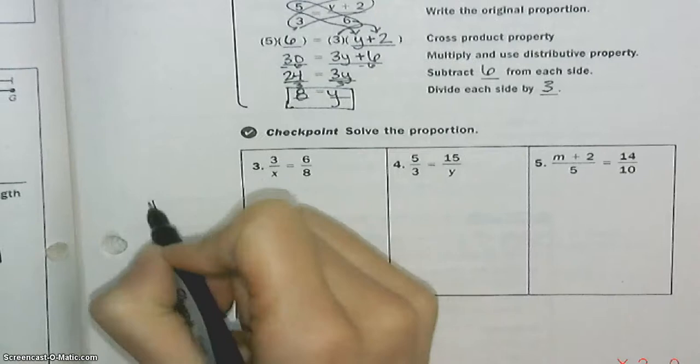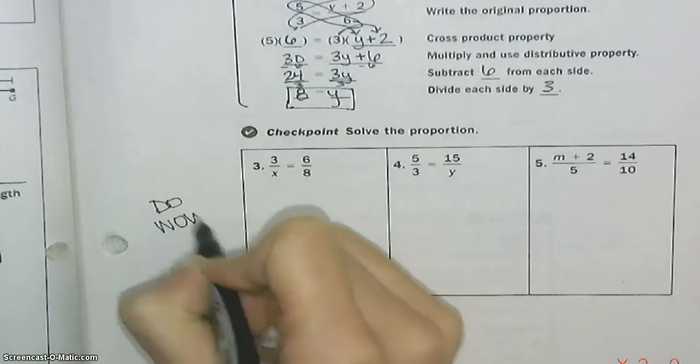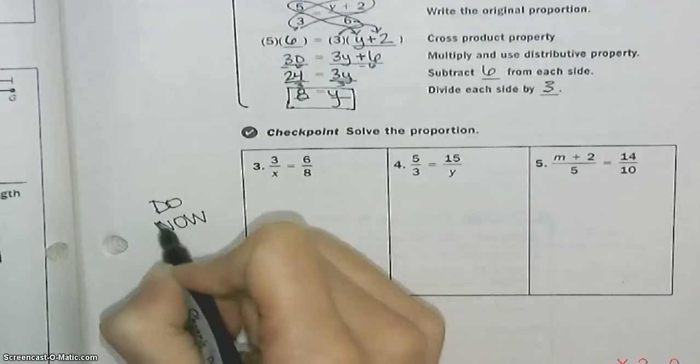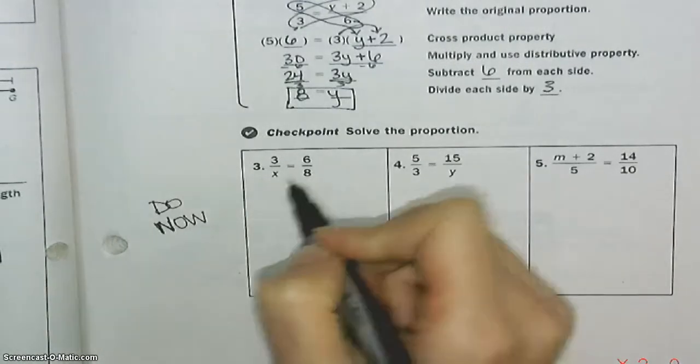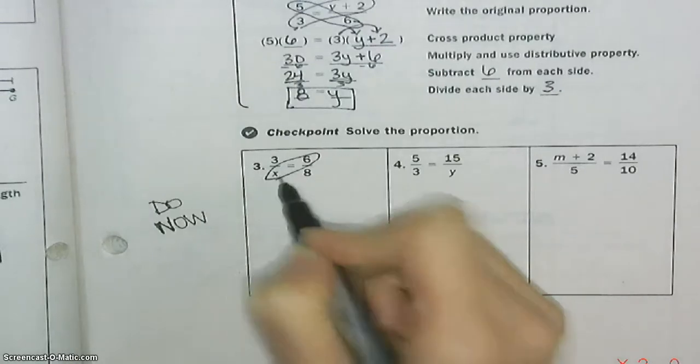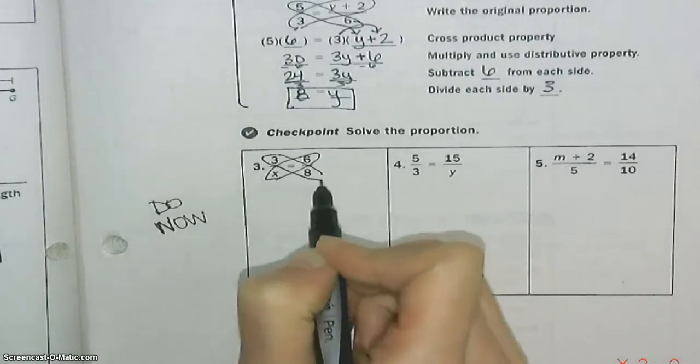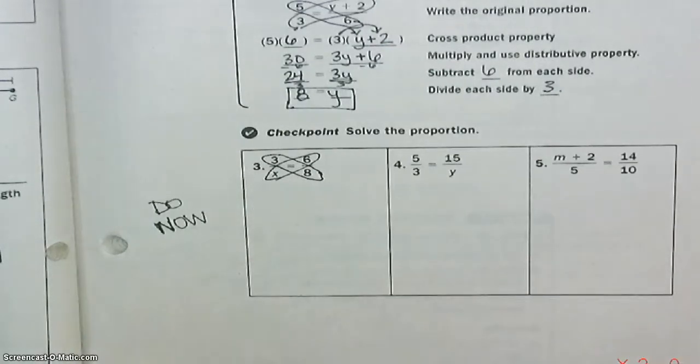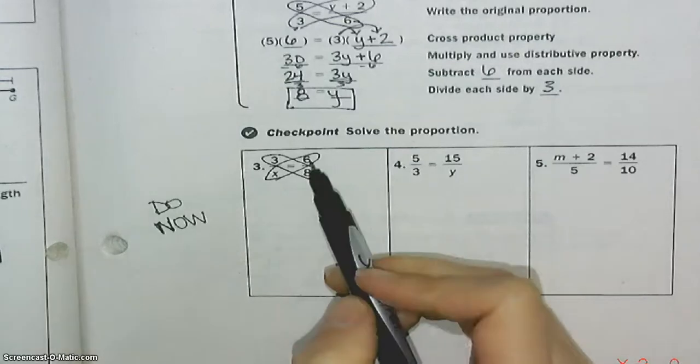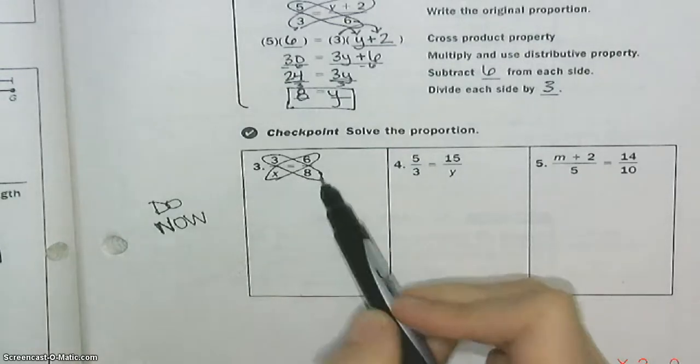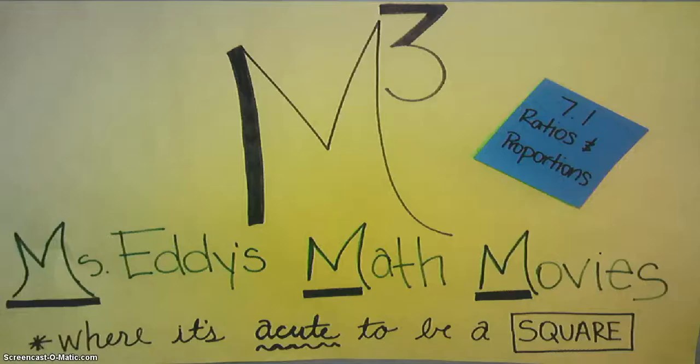You're going to do these now. We'll check them. You're going to cross multiply. This times this is equal to this times this. Means equals product of extremes. This is M cubed, signing out.